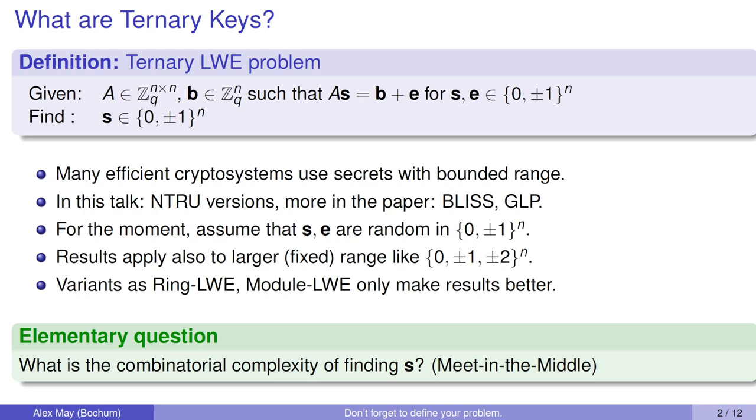Many efficient cryptosystems use secrets with this bounded range, like our ternary keys. In this talk we will especially address NTRU versions, but there are more in the paper like the signature schemes BLISS and GLP. For the moment we will assume that S and E are random ternary vectors. Our results also apply to larger fixed ranges, like if we add plus minus twos. Our results also apply to variants such as Ring-LWE and Module-LWE. In this talk we will address a very elementary question: what is the combinatorial complexity of finding S? By combinatorial complexity I mean meet-in-the-middle algorithms.